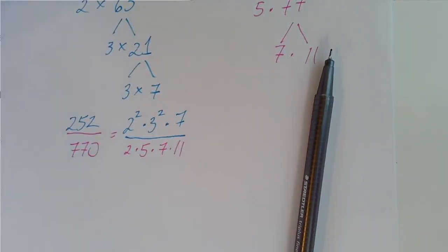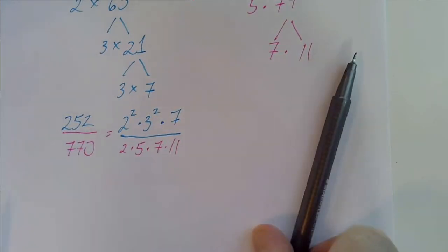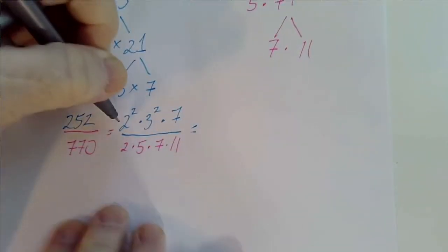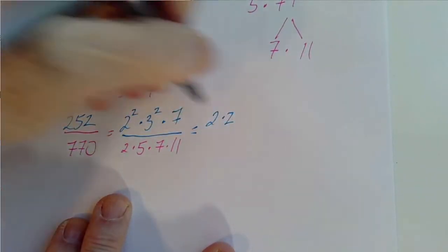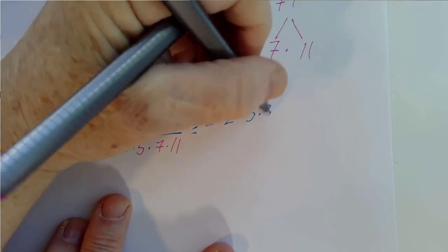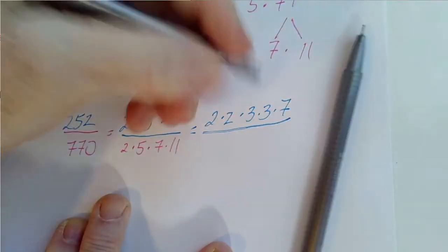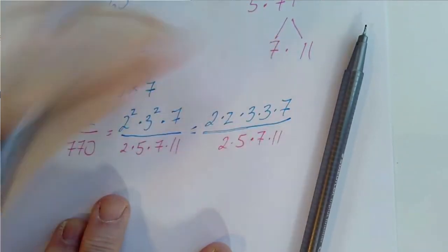And it's important to remember what these squares mean. I could write, if I wanted, 2 squared is just 2 times 2. 3 squared is just 3 times 3. And then we have 7. We have 2 times 5 times 7 times 11. And now we have some common factors.